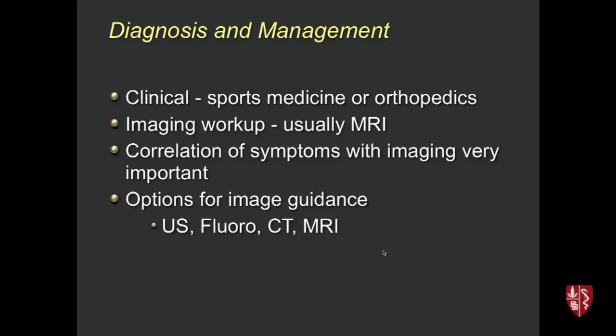It's important to work with sports medicine or orthopedic surgeons who know what we can and can't do. The imaging workup usually includes MRI and plain films. It's really important to correlate the patient's symptoms with what we see on imaging — a cystic lesion in the foot that is incidental and asymptomatic doesn't make sense to go after. Image guidance-wise, a lot of what I'll show is ultrasound; fluoroscopy is available, some procedures we do under CT, and when we had interventional MRI we would use that occasionally as well.